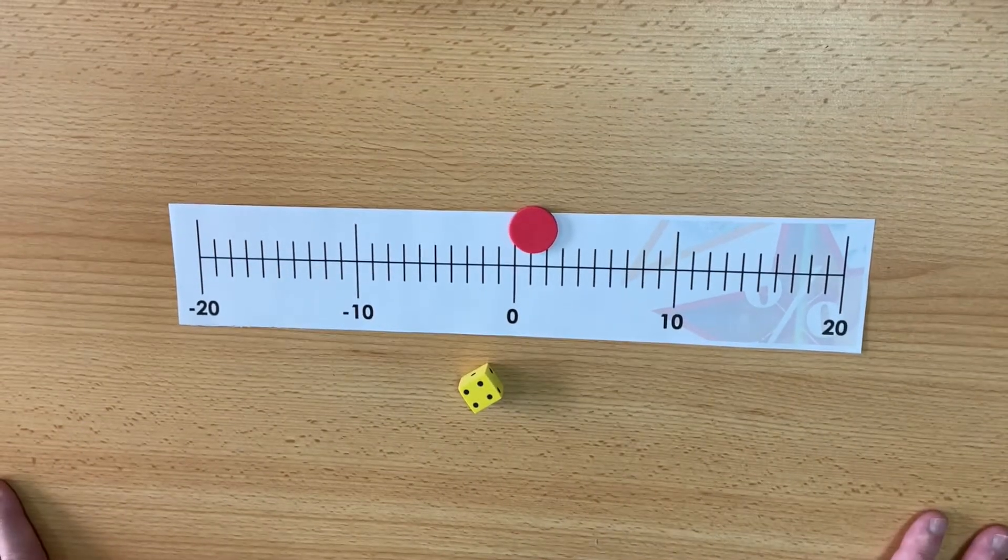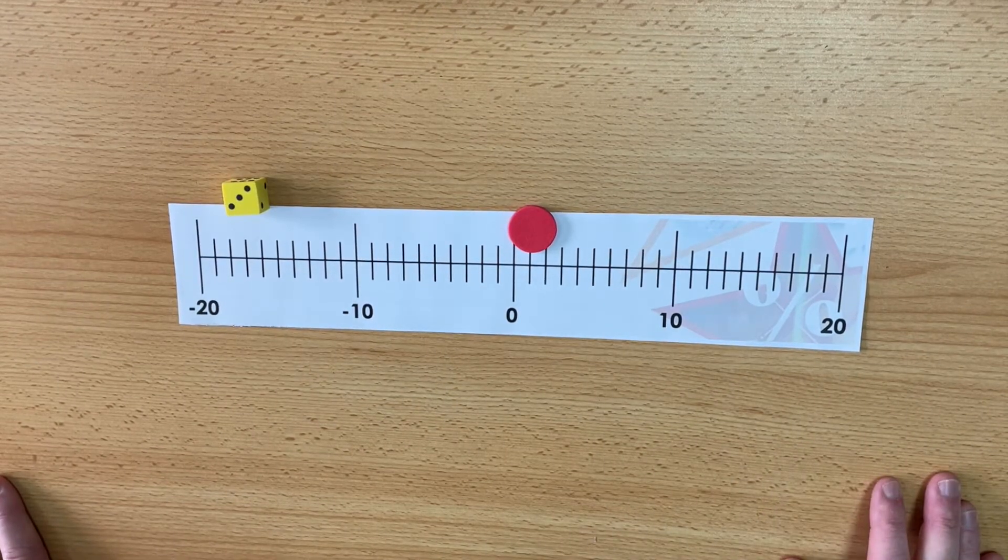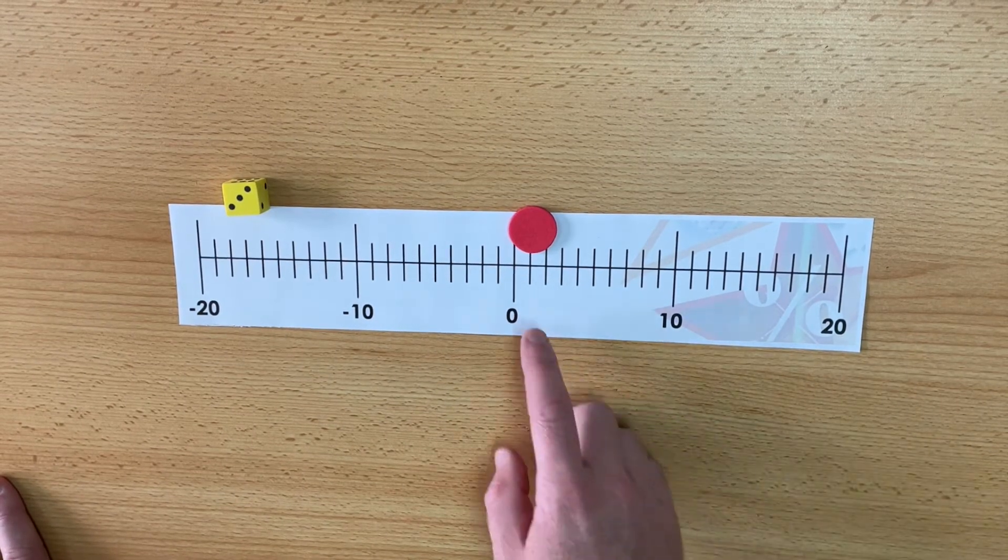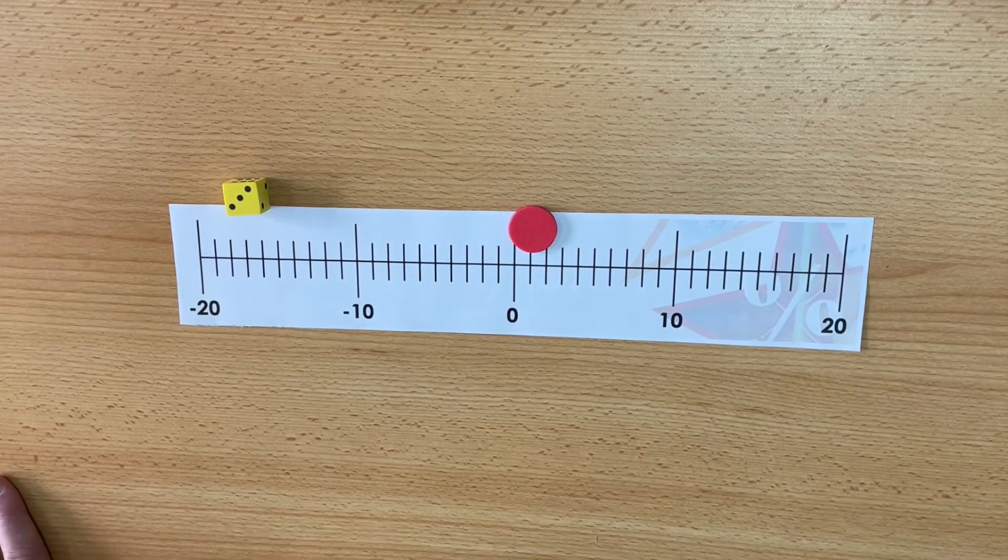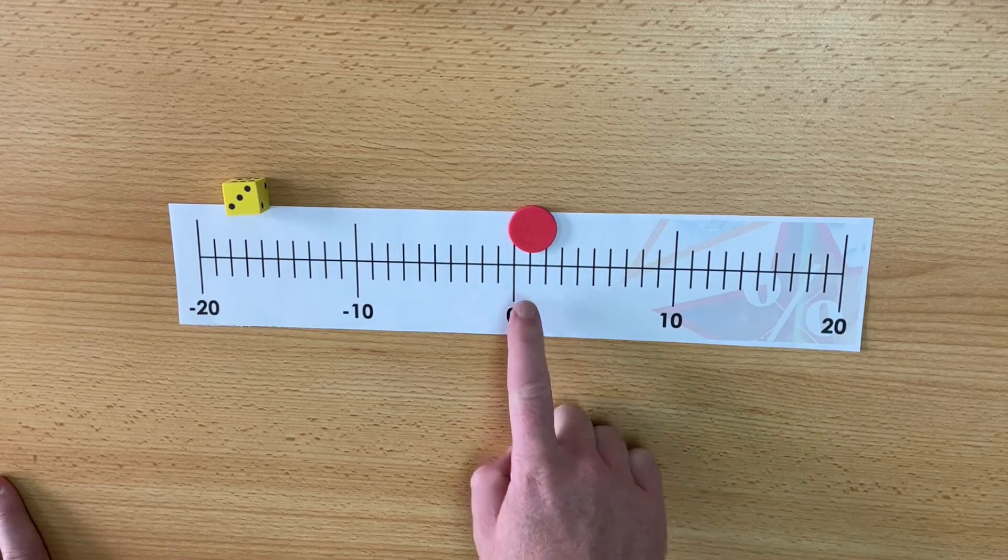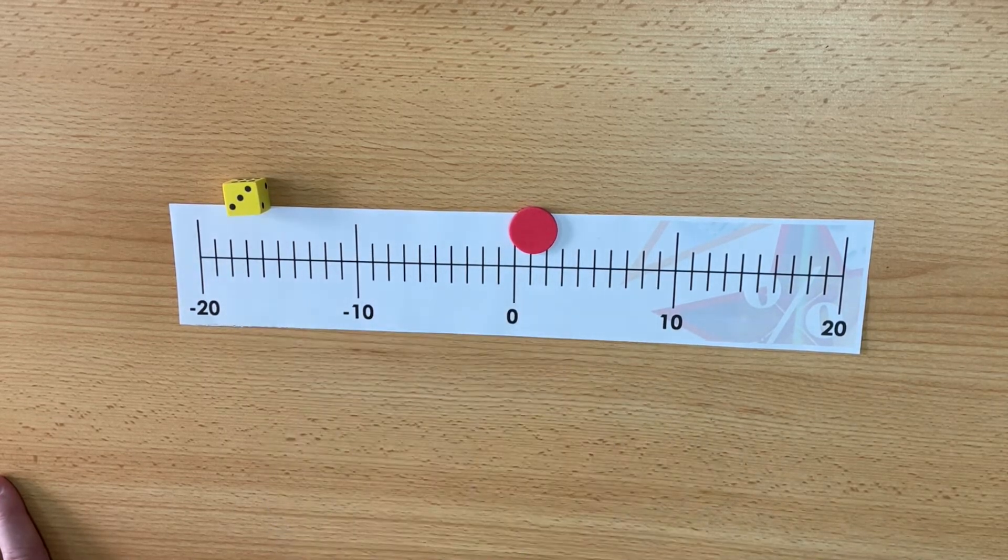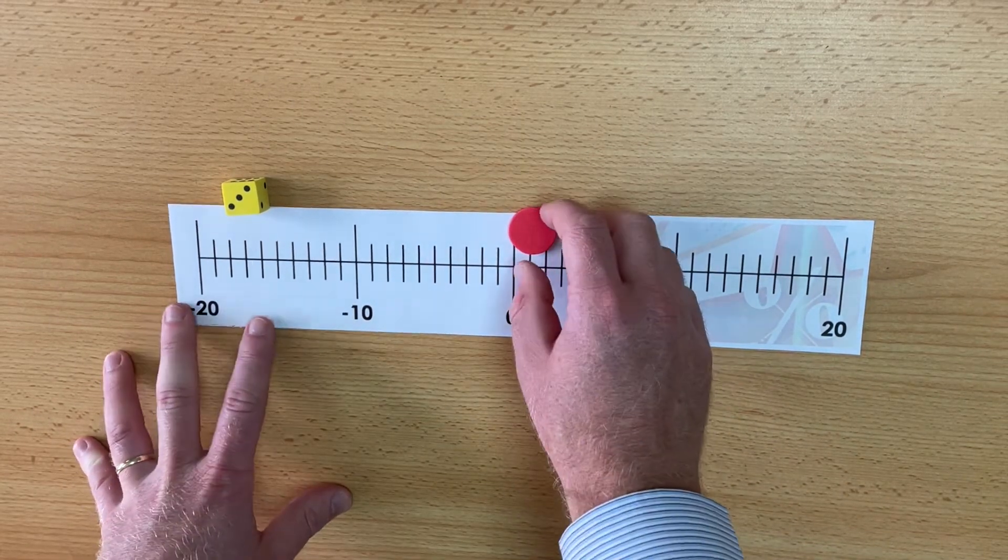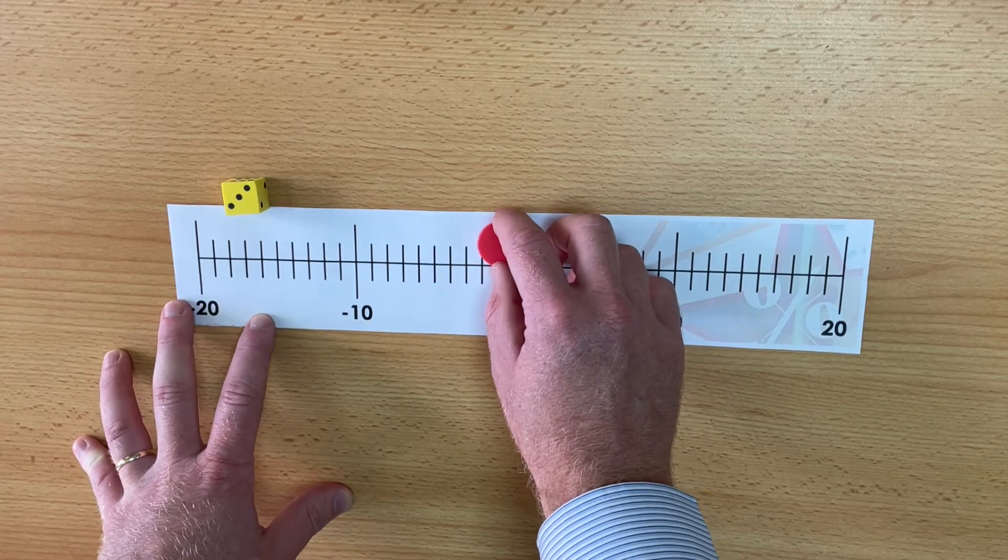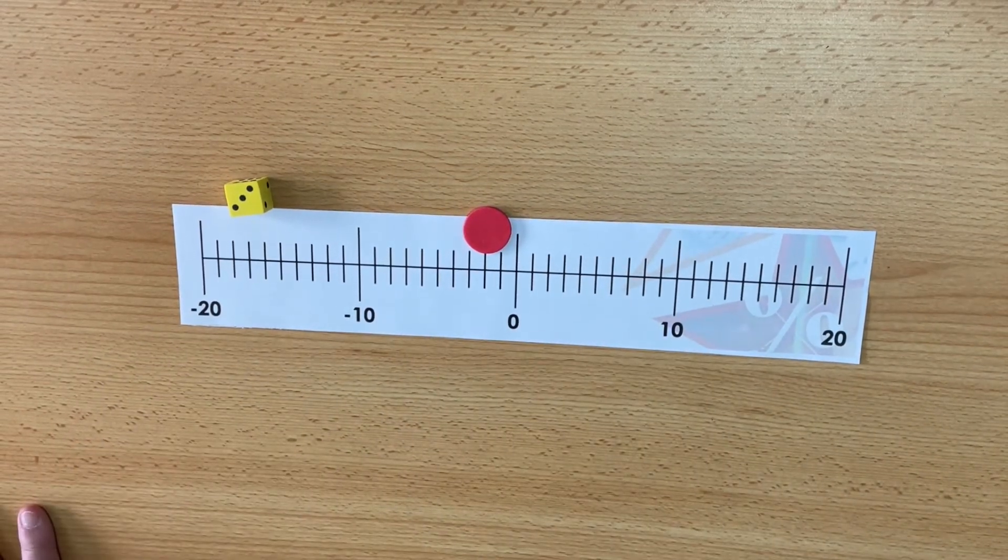Now if you're really good at this, after you've rolled the dice and it is your turn, what you must do is you must find the number that it will move to before moving the counter. So I'm on positive one at the minute and I have to take away three so I know the answer to that is going to be negative two. One, two, three and then I can check it and there we go, negative two.